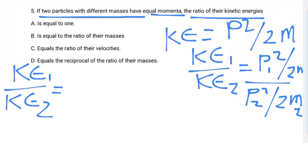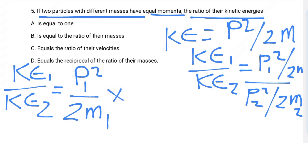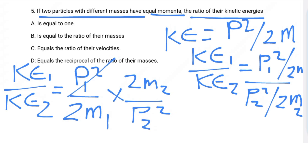Since p1 = p2, the p-squared terms cancel. So kinetic energy one over kinetic energy two simplifies to m2 divided by m1. The ratio of their kinetic energies is equal to the inverse ratio of their masses: KE1/KE2 = m2/m1.